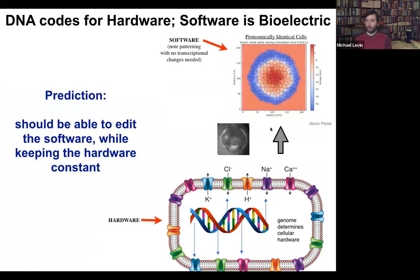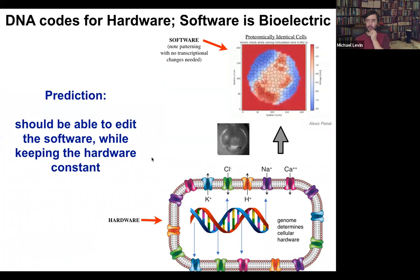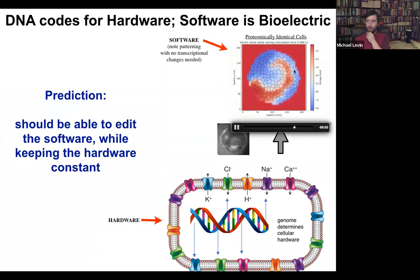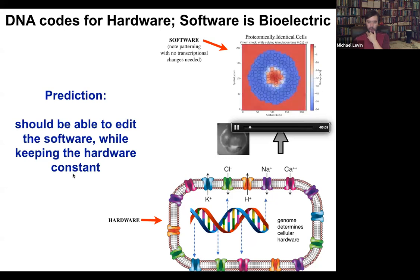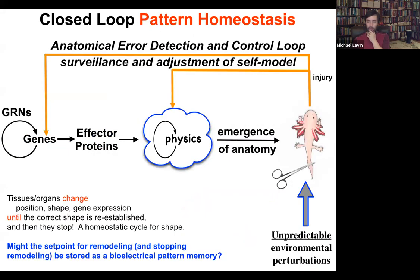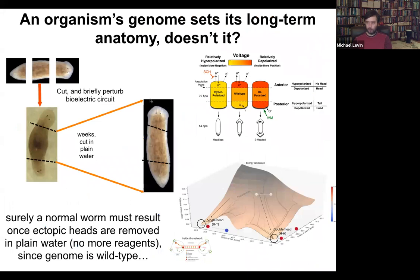The prediction of this way of thinking is that you should be able to edit the software — meaning change the information stored in the system while keeping the hardware constant. In particular, the piece of information that we want to change is the set point. We want to change the set point towards which cells are working in this error minimization scheme.